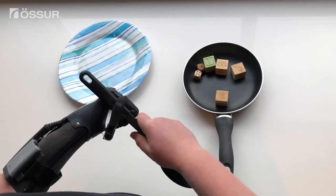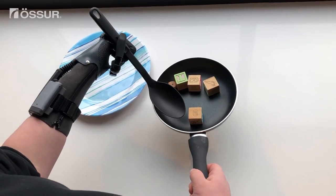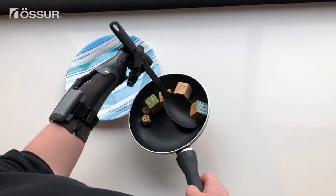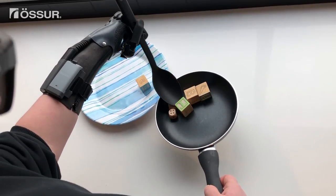Twist the spoon slightly so that it is following the line of the index. Using your other hand to hold the pan, scoop the blocks or food with the serving spoon.